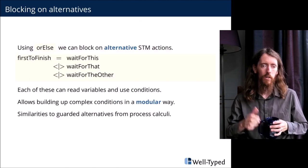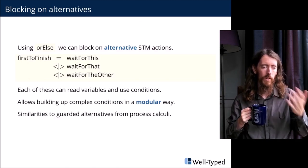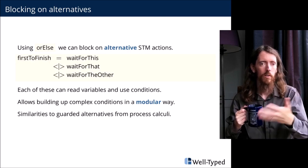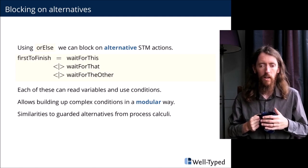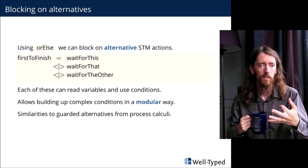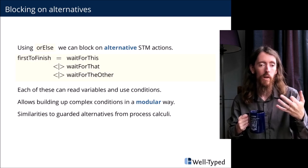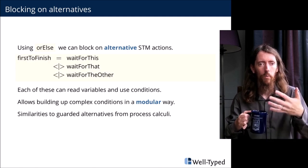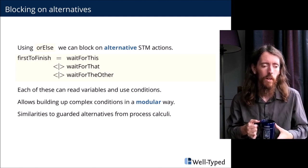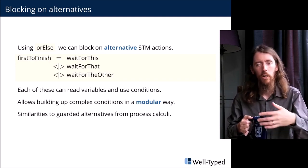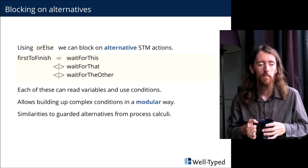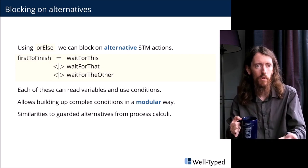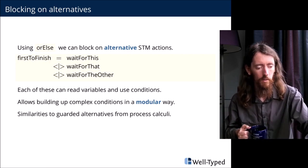Let's talk about alternatives. In this example we have a first-to-finish operator — we're blocking on three different things and whichever one finishes first gives us the result. This lets us block and wait on multiple different alternatives, each of which can themselves use reads, writes, and `retry`. This lets us build up complicated conditions in a modular and compositional way, which as we all know is a very useful and powerful thing.